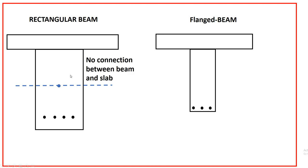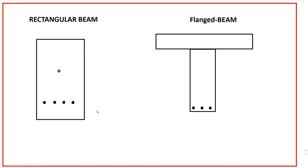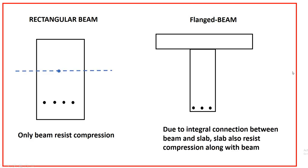In the flange beam, since the beam and slab are cast together in one operation, they act monolithically. Now let us see the difference in resisting forces. In a rectangular beam, only the beam resists compression — the slab does not take any part in resisting compression. In a flange beam, due to the integral connection, the slab also resists compression along with the beam.